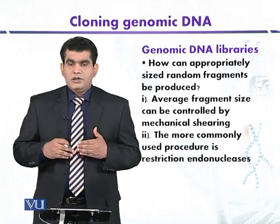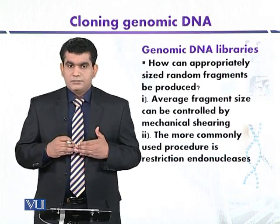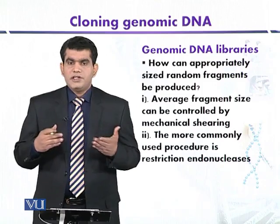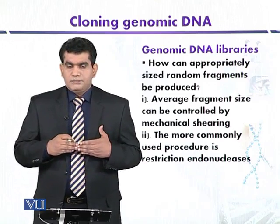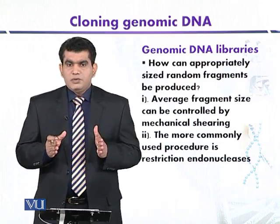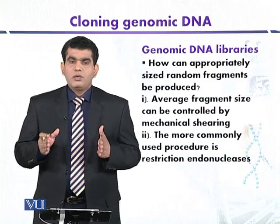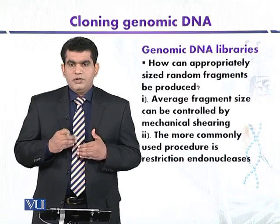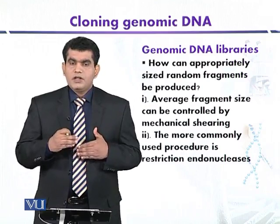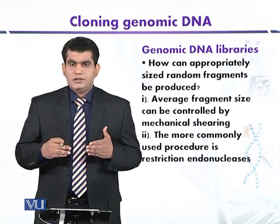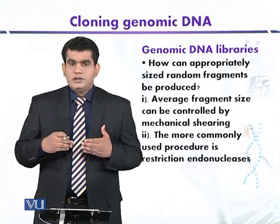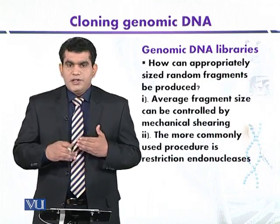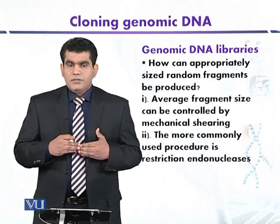The question is how we can generate DNA fragments of appropriate sizes. Two strategies are mainly used. The first is mechanical shearing, where DNA is disintegrated mechanically using suitable devices. Random DNA fragments are produced but their size can be controlled; however, cloning with a suitable vector requires modifications like linker molecules. The most appropriate technique is to use restriction endonucleases to generate discrete DNA fragments.